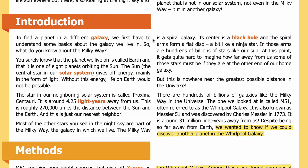Introduction: To find a planet in a different galaxy, we first have to understand some basics about the galaxy we live in. The planet we live on is called Earth, and it is one of eight planets orbiting the sun. The sun gives off energy mainly in the form of light — without this energy, life on Earth would not be possible. The star in our neighboring solar system is called Proxima Centauri, around 4.25 light years away, roughly 270,000 times the distance between the sun and the Earth. Most stars you see in the night sky are part of the Milky Way, the galaxy in which we live.